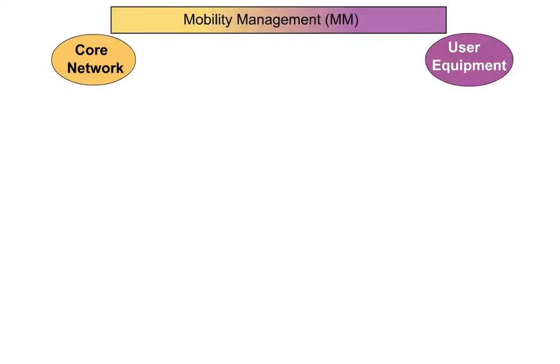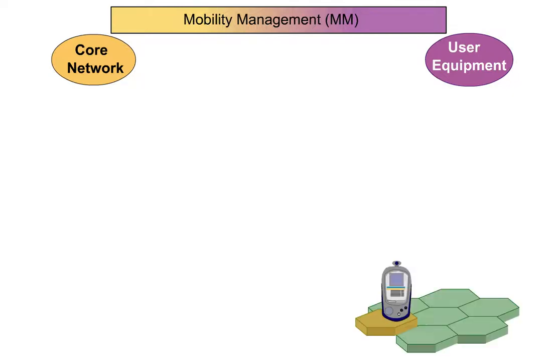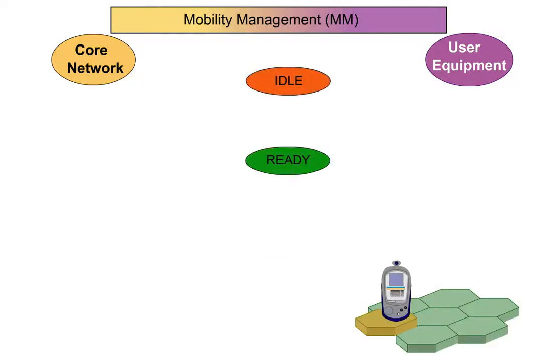The packet switched core network, CN, recognises three states for user equipment: idle, ready and standby.